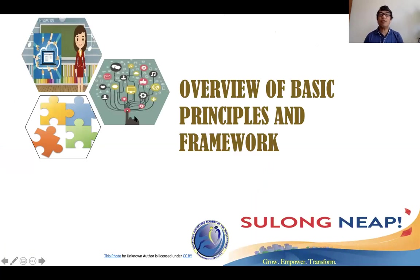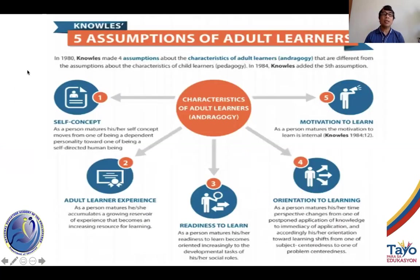We begin with the overview of basic principles and framework of design of training, starting with the five assumptions of adult learners. These five assumptions were developed by Knowles. In 1980, he made four assumptions about the characteristics of adult learners, which we sometimes refer to as andragogy. And then in 1984, he added the fifth assumption.